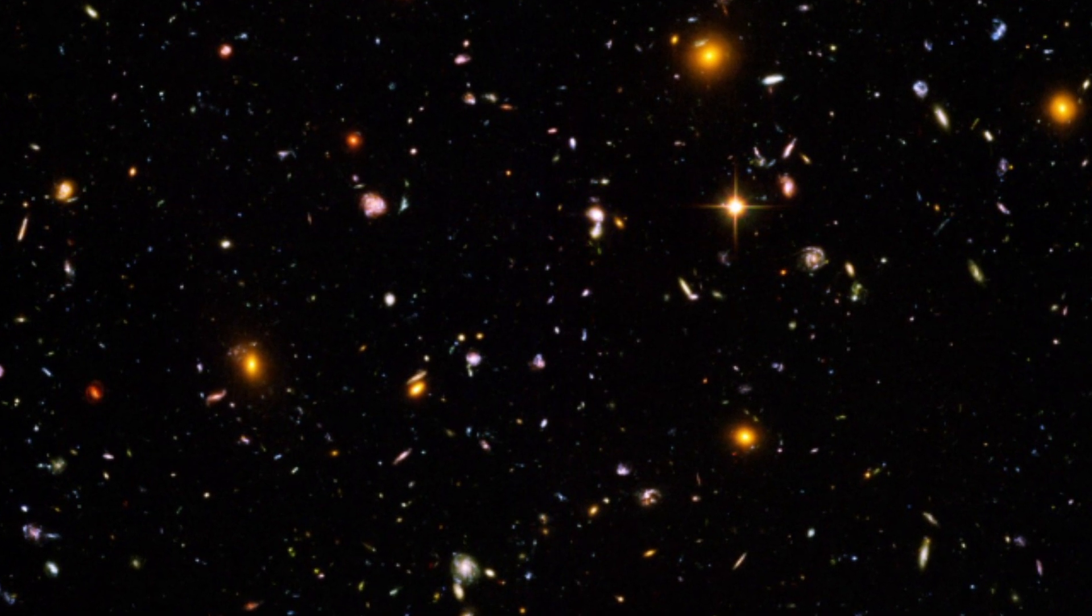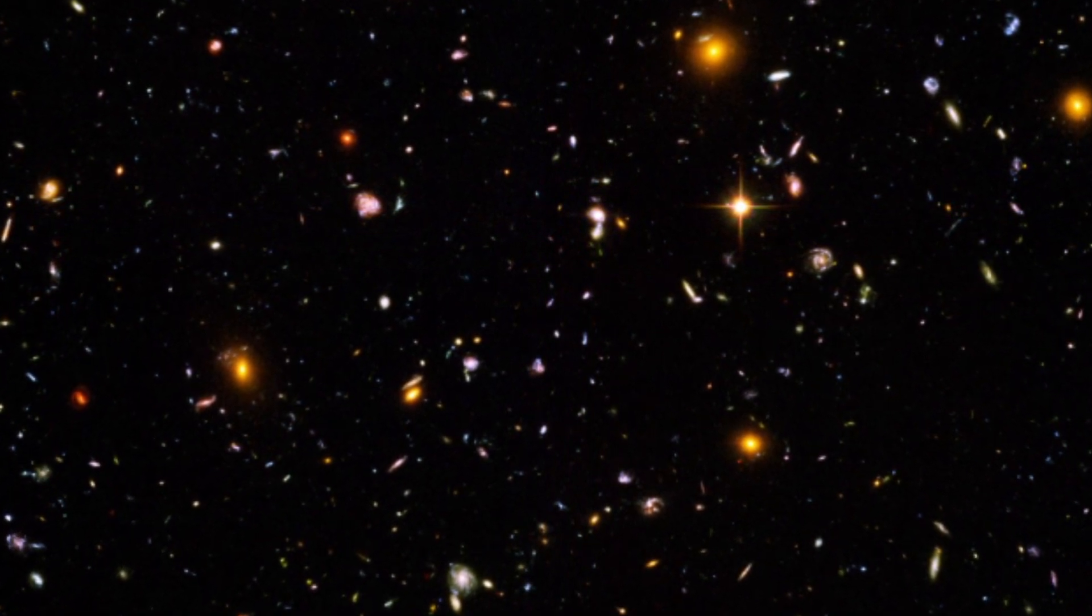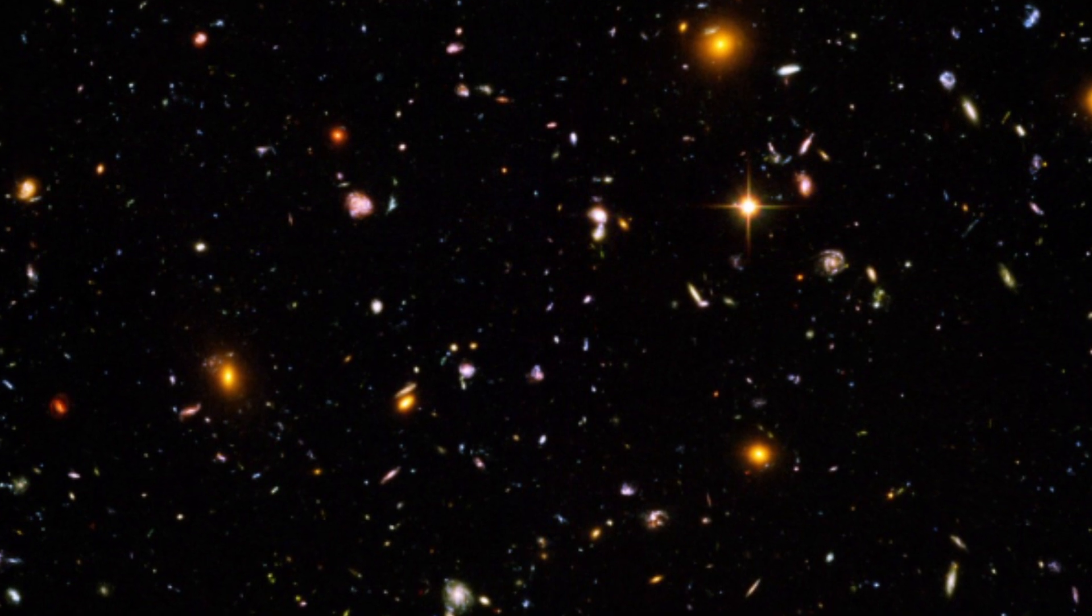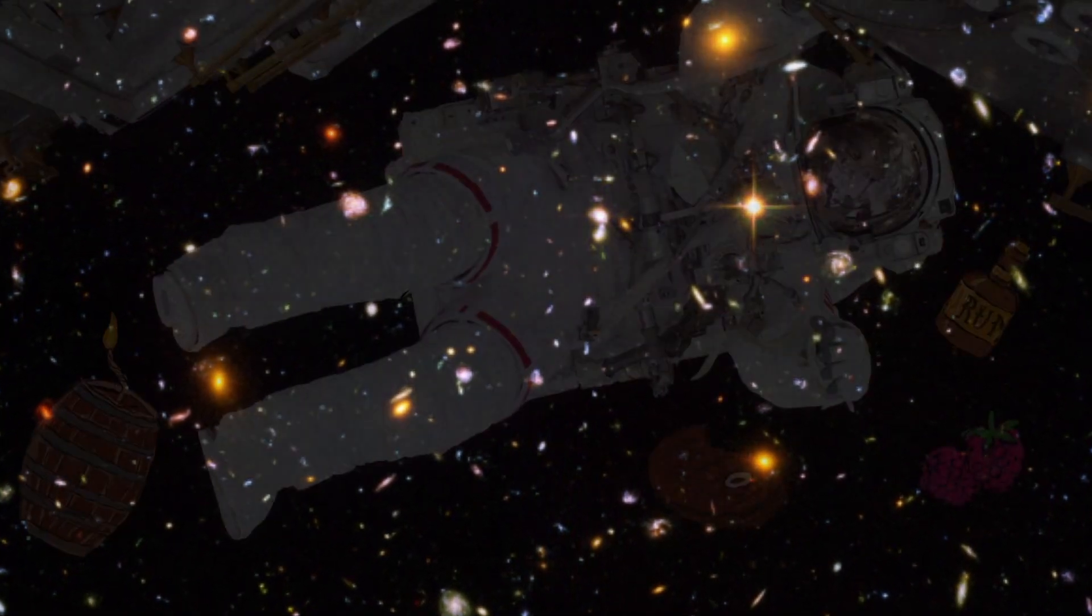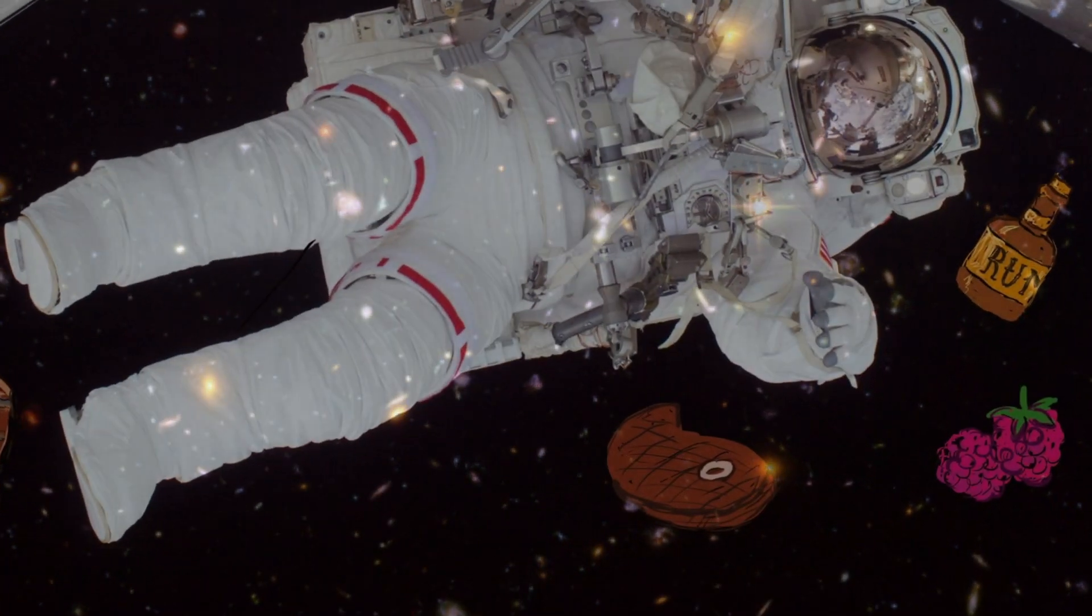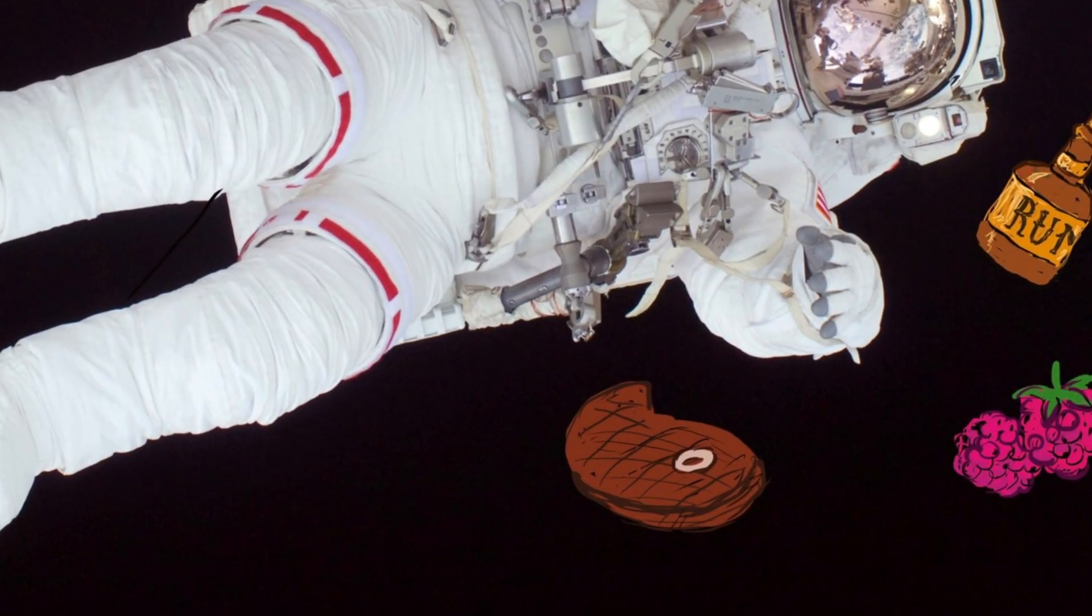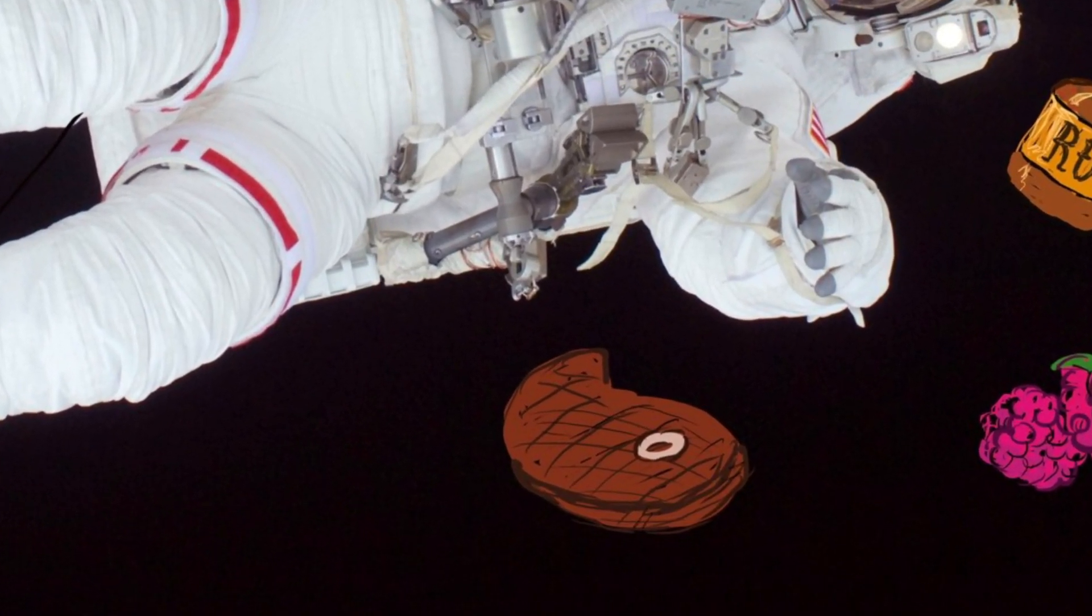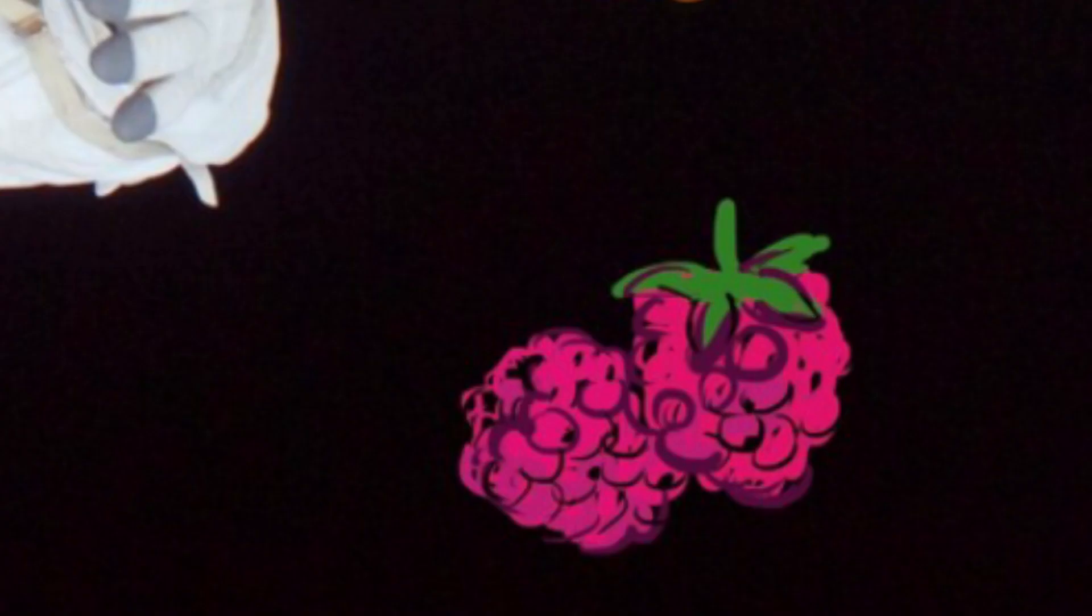Astronauts, after coming back from a spacewalk and taking off their helmets, have noticed the celestial smell on their spacesuit, and they have described it as hot metal and burnt steak, with hints of gunpowder, raspberries, and rum.